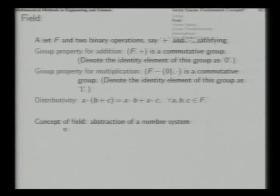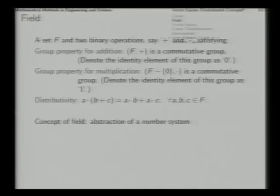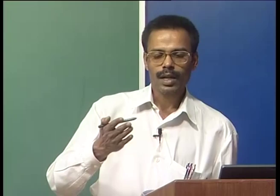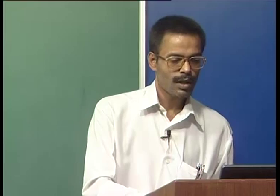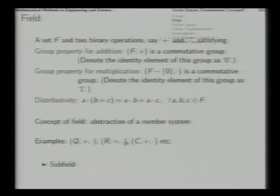If all these requirements hold for all a, b, c in the set F, then F with the two binary operations defines what is called a field. This concept of field is actually the abstraction of a number system. Whatever is defined here formally applies to all the number systems we use — the rational numbers, real numbers, complex numbers — all these fulfill these requirements and so all are examples of fields. We already have an example of a subfield: the set of real numbers is a subset of the complex numbers, and R is actually a subfield of C.